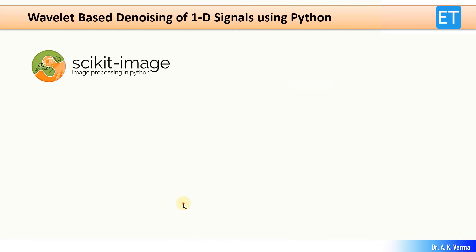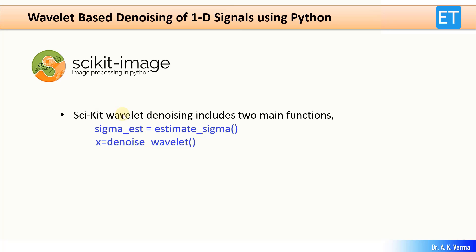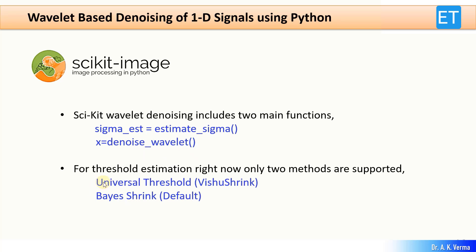The scikit-image wavelet denoising library includes two main functions: estimate_sigma and denoise_wavelet. For threshold estimation, right now only two methods are supported by this library: VisuShrink and BayesShrink, which is the default.